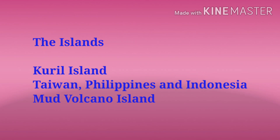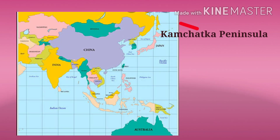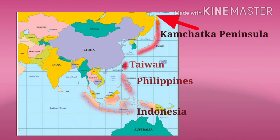The most important island groups are: first, the Kuril Islands, which extend from the Kamchatka Peninsula up to the main islands of Japan. Further southwards are the islands of Taiwan, Philippines and Indonesia.